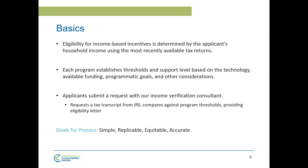As we developed and refined this process, we focused on a few goals: making sure the process is simple and easy for applicants and all parties involved; making sure it's replicable across all residential applicants; making sure it's equitable by treating different situations equitably; and making sure it's accurate — both in that we have high confidence in the income numbers and that those numbers accurately represent who needs this support.